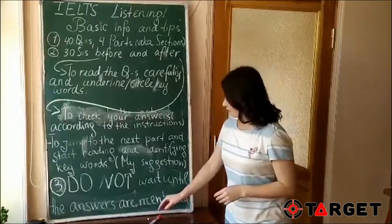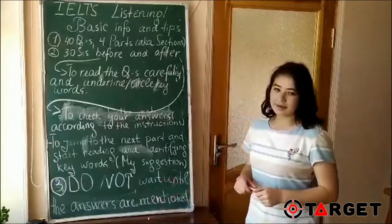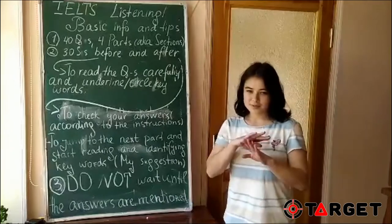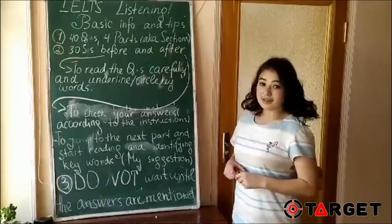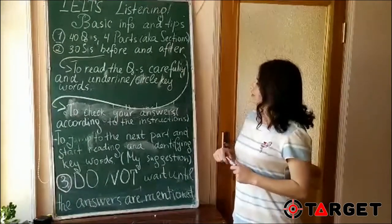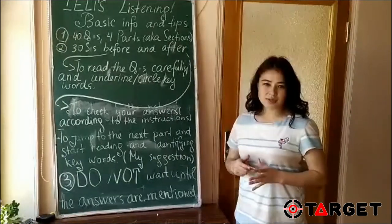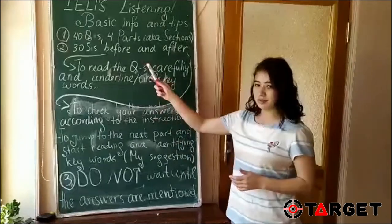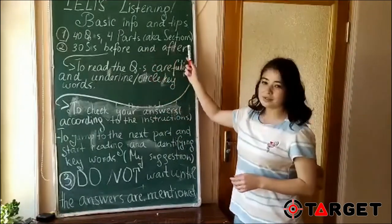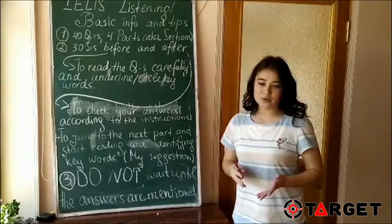So let's get started. As you know, in IELTS we have several tips. So first we're going to start with basic info and several tips. Basic information about IELTS is that there are four questions and four parts, also known as sections. I think you guys must be informed that there have been some changes made by British Council, and right now sections are not called sections anymore, they're called parts.